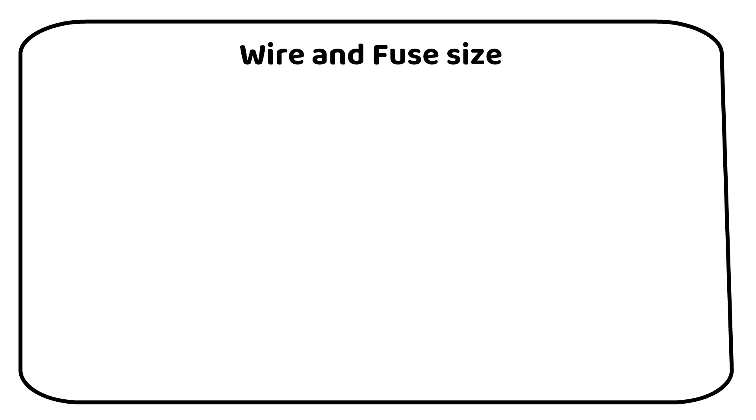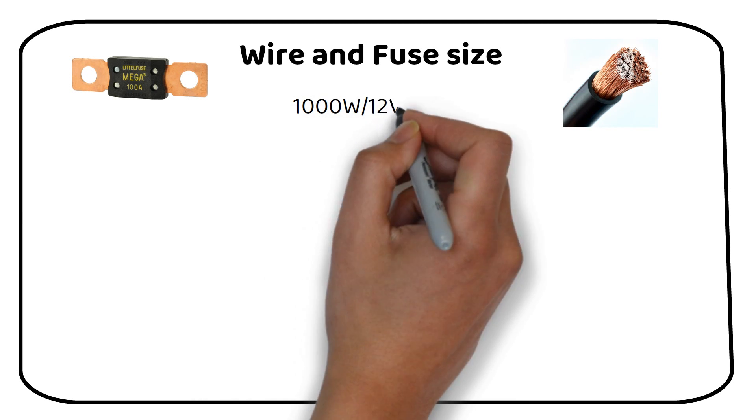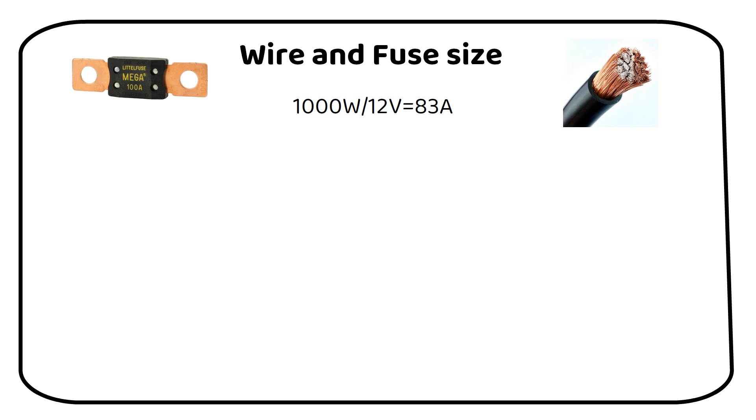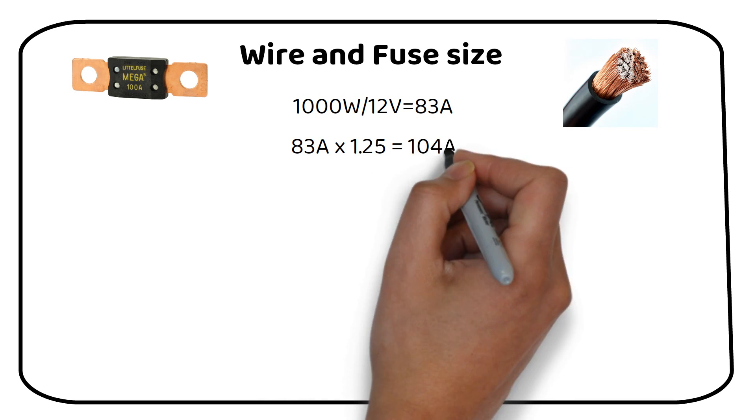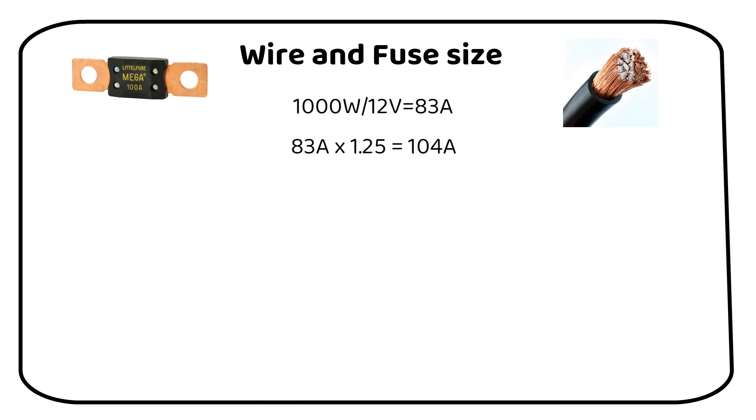Let's explore what wire and fuse sizes you need in the system. As you already know, our system draws a current of 83 amps. Applying a safety factor of 125%, the current requirement becomes 104 amps.